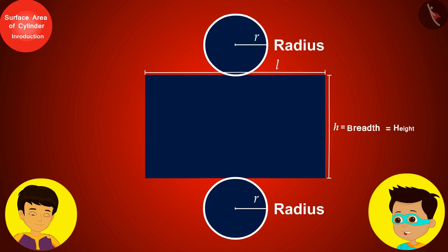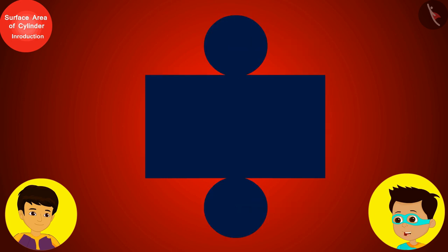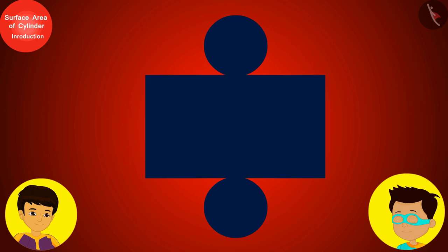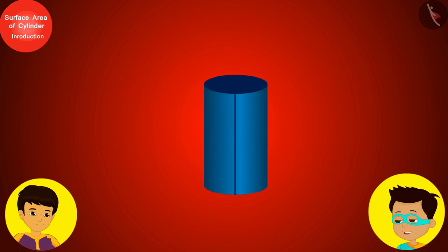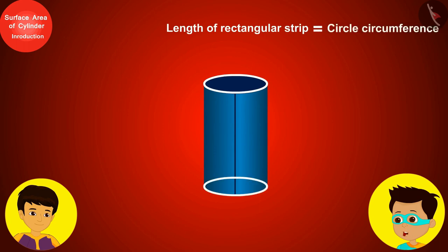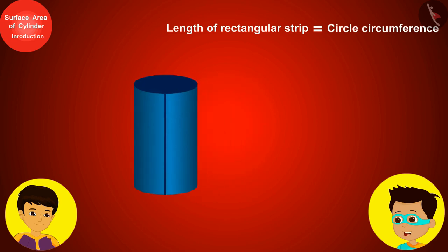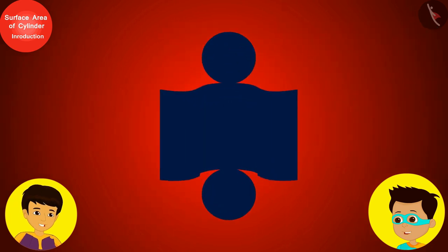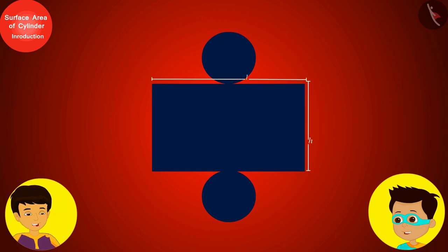If we fold this rectangular strip back into the cylindrical shape, we find that the length of this rectangular strip is equal to the circumferences of the top and bottom circles of the cylinder. Therefore, we can say that the length of this rectangular strip is equal to 2πr.